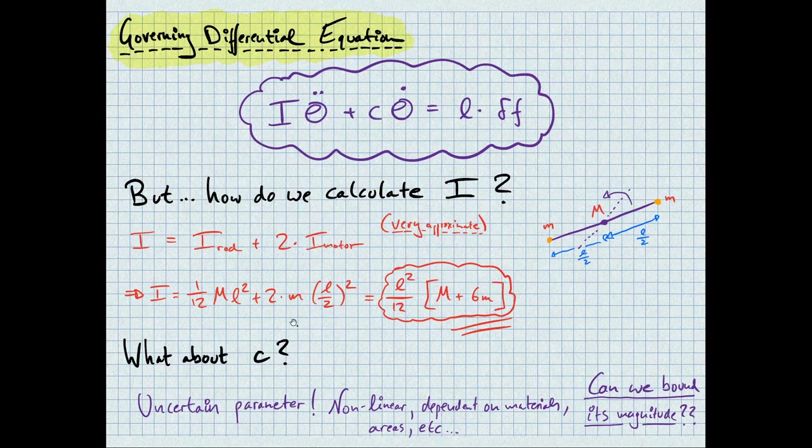More interestingly, what about C, the friction coefficient? This is a rather, well, very uncertain parameter, and we don't have direct ways of measuring it. It is non-linear, dependent on materials, areas, masses, and so forth. But the question is, can we somehow bound its magnitude? So, can we say it's between, like, zero and two? This, again, is something we'll look at in detail in the next video.